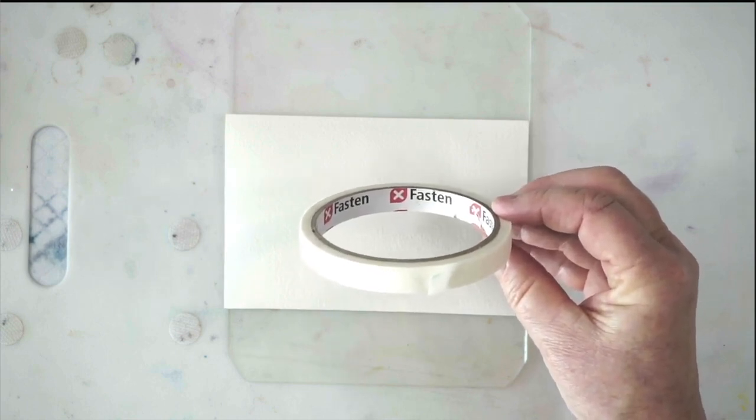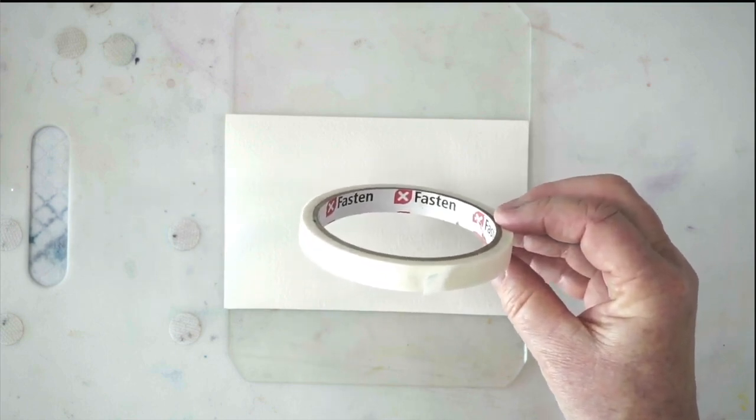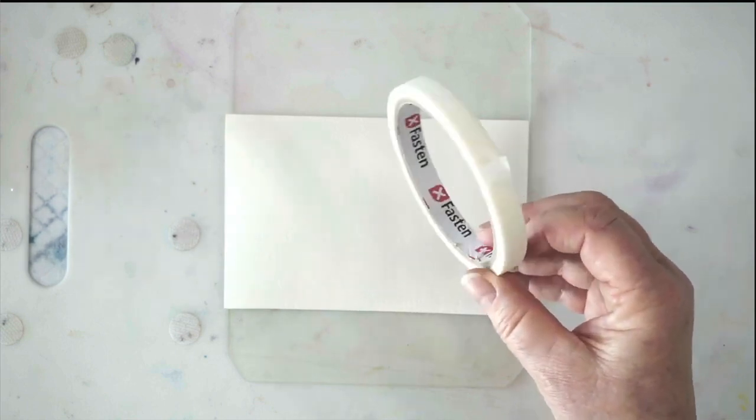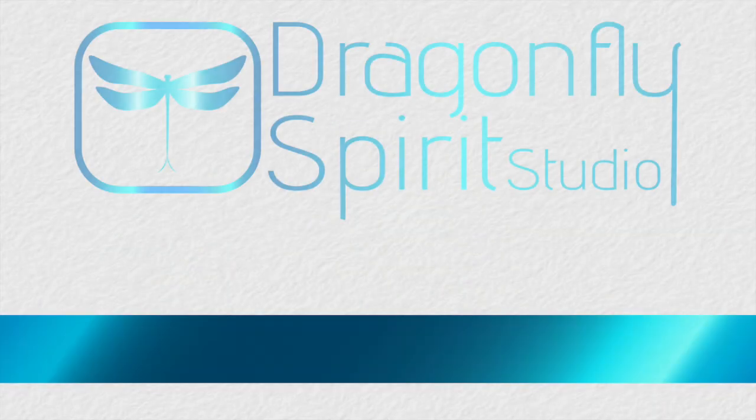And if none of those things work for you and you want to try this tape, there it is. X-Fasten Artisan Tape, half inch, white. You can get it on Amazon in the US. I don't know about the rest of the world. I hope this helps you. See you next time. Happy painting.